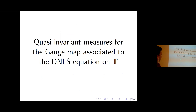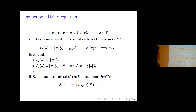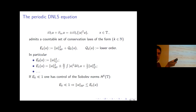The third part concerns the gauge map associated to the derivative nonlinear Schrödinger equation. Here u is complex-valued, and the equation is a Schrödinger equation with a cubic nonlinearity containing a derivative. The equation is L^2-critical, and the plus and minus signs mean there is no focusing or defocusing scenario.